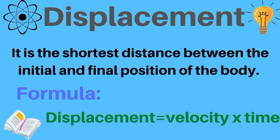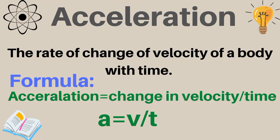Displacement is the shortest distance between the initial and final position of the body. Its formula is: displacement is equal to velocity multiplied by time.